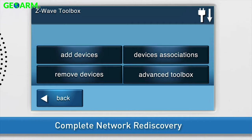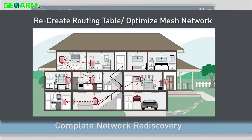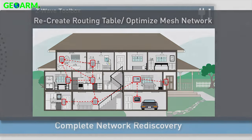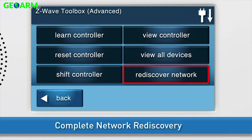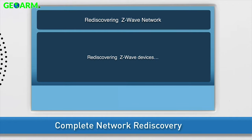Lastly, complete a Network Rediscovery. During Network Rediscovery, the panel will recreate its Z-Wave Routing Table and optimize the Mesh Z-Wave Network. To initiate a Network Rediscovery, navigate to the Z-Wave Toolbox, then press Advanced Toolbox. Press Rediscover Network. The panel will display a message that it is rediscovering the Z-Wave devices.